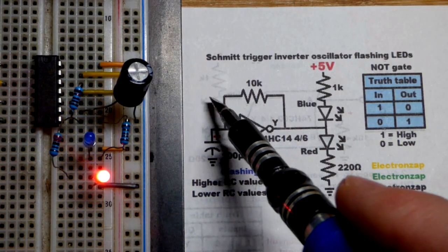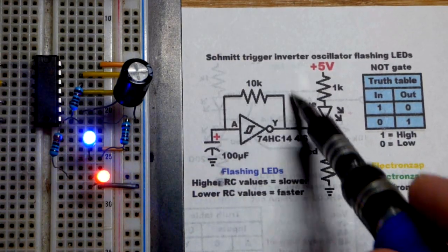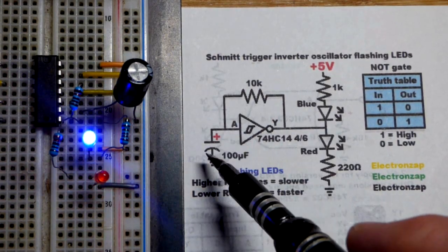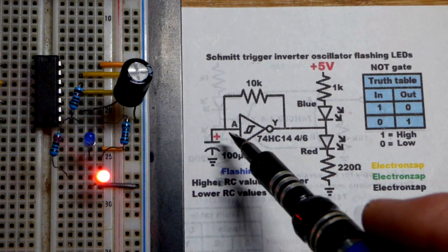It has a high enough voltage to set the output low. So when the output's low, then the capacitor discharges until it gets down to the lower threshold.